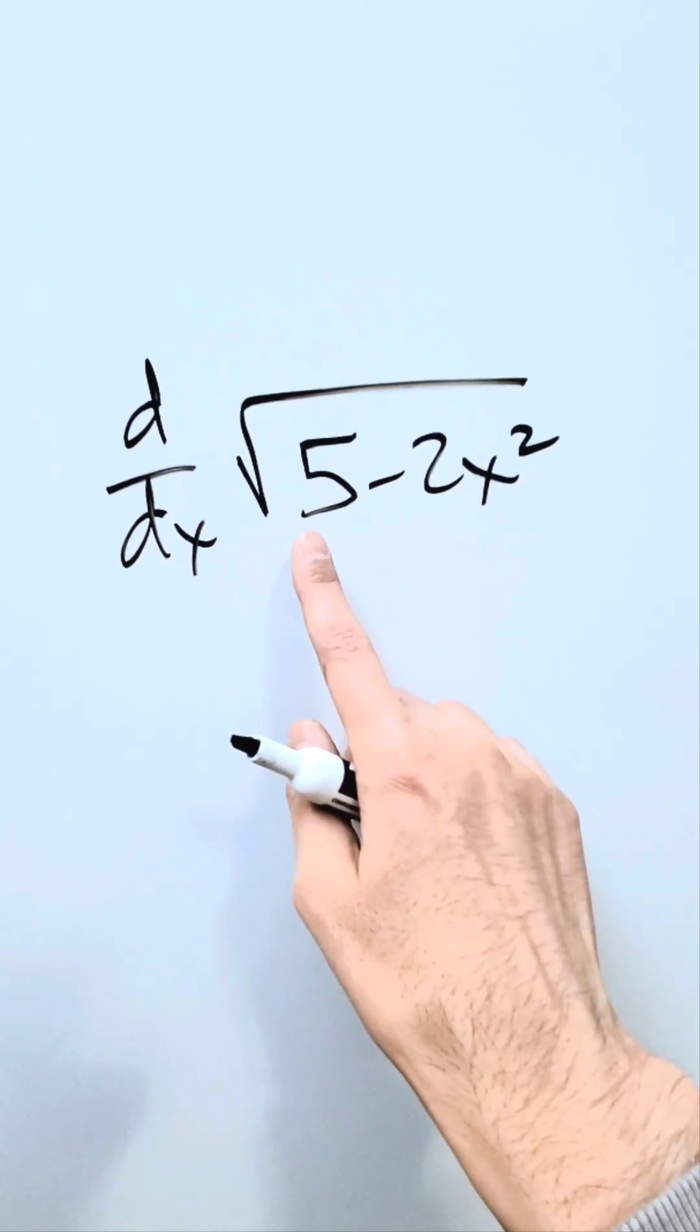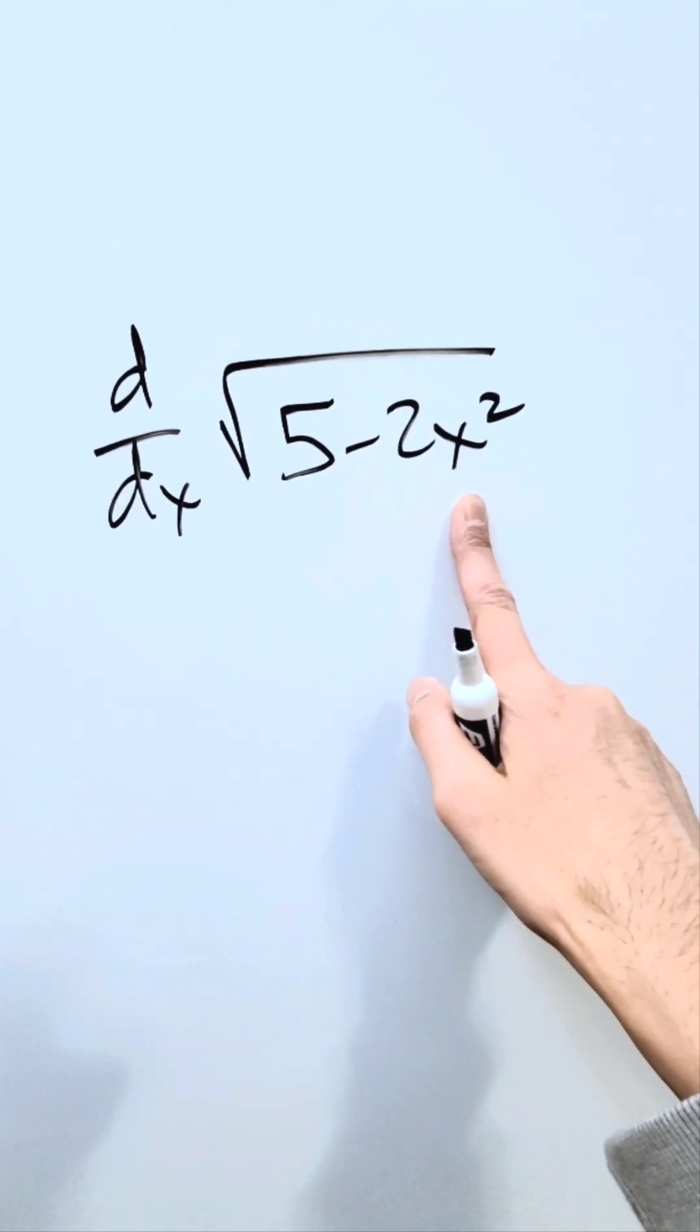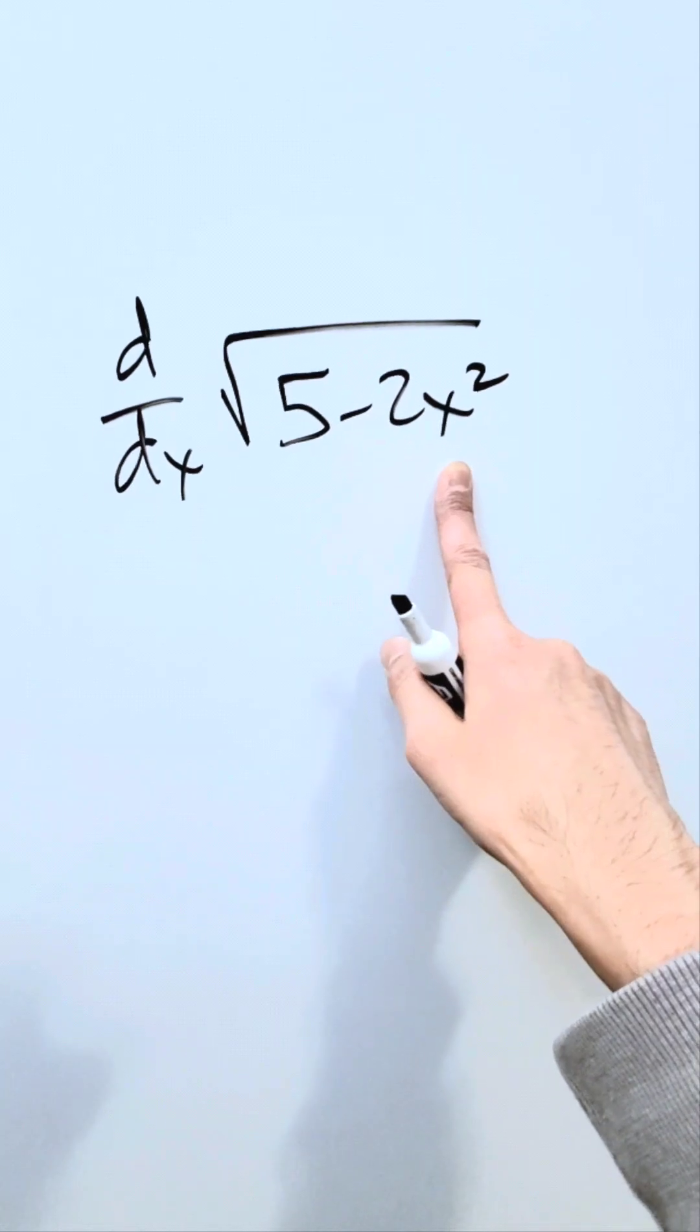I'm interested in determining the derivative of this function, square root of 5 minus 2x squared, but before we do that, let's examine the basis behind it.